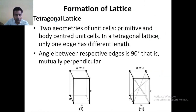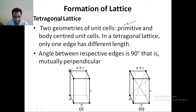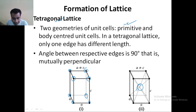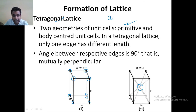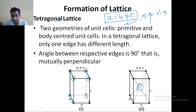Moving toward the next type — your tetragonal. In tetragonal, you have the possibility of only two types: primitive, meaning the constituent particles will be present at the corners of the unit cell only, and second is body centered. In the tetragonal, A is equal to B but it is not equal to C — one edge is having a different length. But the angle alpha is equal to beta is equal to gamma is equal to 90 degrees. This is the characteristic of your tetragonal lattice.